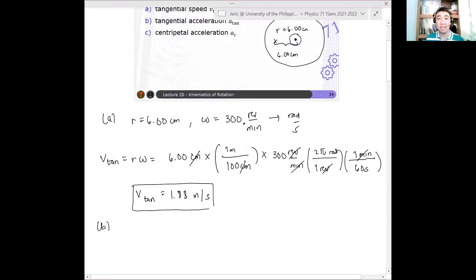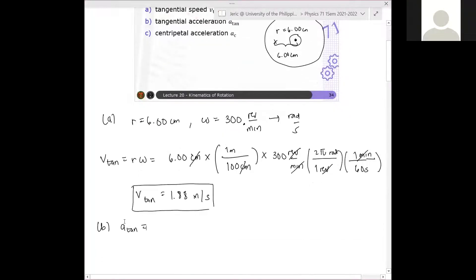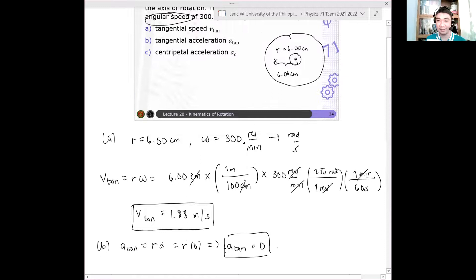Letter B. What is the tangential acceleration? What is a_tan? Remember, in the problem, it is stated that this is rotating at a constant angular speed. Therefore, what can we say about the angular acceleration? Zero. Zero. So remember, your tangential acceleration is r alpha, where alpha is the angular acceleration. But since in our problem, alpha equals zero. Therefore, we have r times zero. And therefore, this is just zero. Therefore, this implies that a_tan is equal to zero. Okay? Got it? Yes, sir.